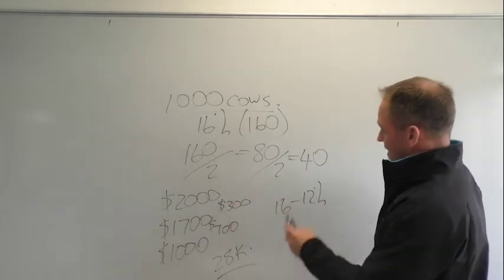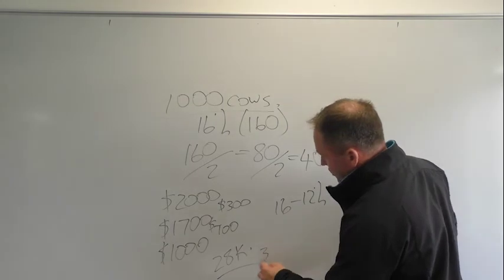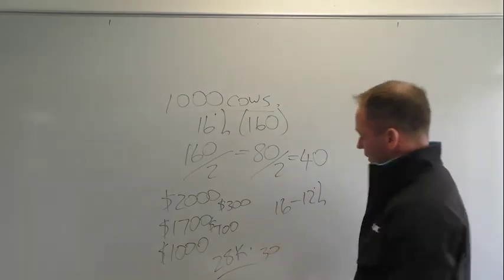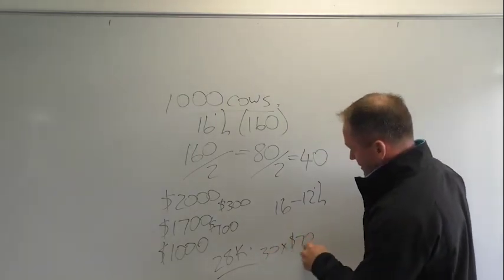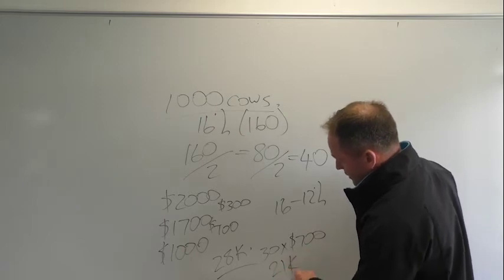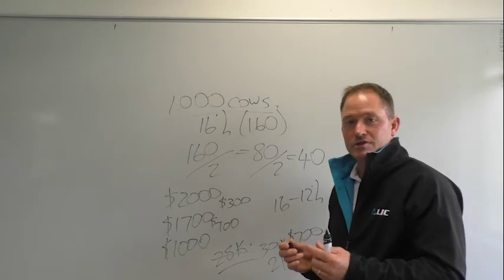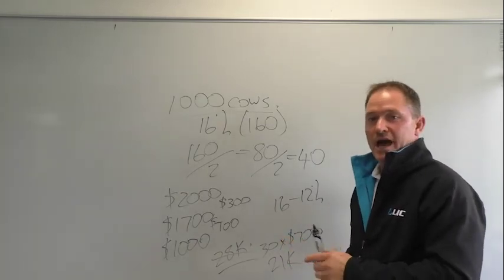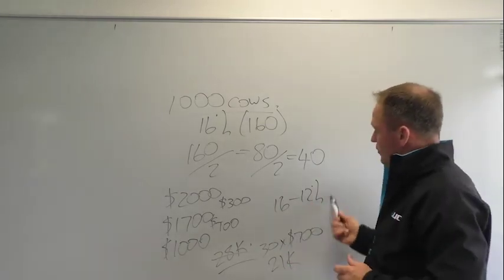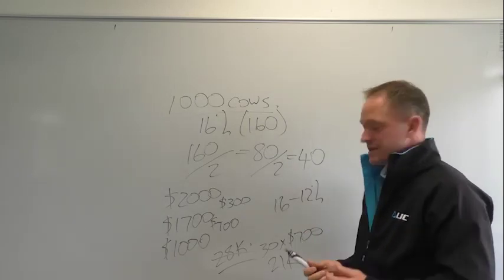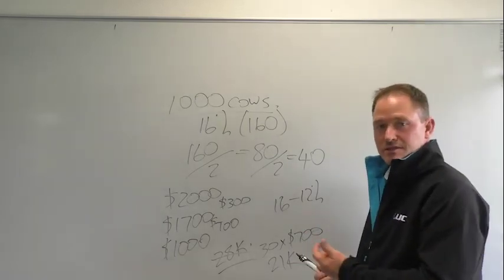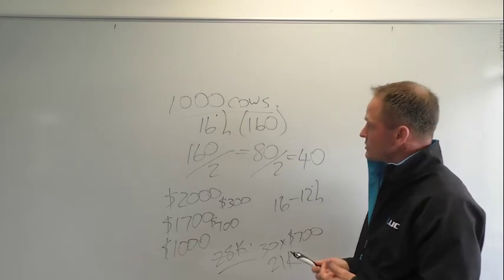So maybe you make the decision that you just bring 30 of those cows through to the following year at the $700 difference we're talking about. We're talking $21,000 instead of $28,000. But it just gives you significant options and brings down this rate of non-pregnant cows to give you some choice, to give you some choice around the individual animals.